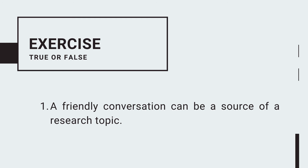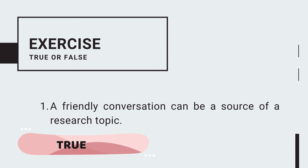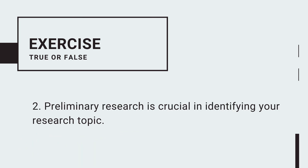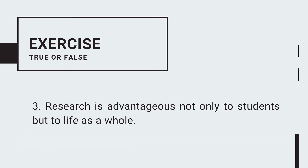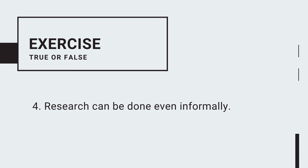For your exercise, let us try to examine if the following statements are true or false. Number one: a friendly conversation can be a source of a research topic. Number one is true — it is one of the sources of research topics discussed earlier. Number two: preliminary research is crucial in identifying your research topic. This item is true. Number three: research is advantageous not only to students but to life as a whole. From the definition of the word research, this item is also true. Number four: research can be done even informally. Research must be systematic — it is a structured inquiry — so it cannot be done informally. Number four is false.